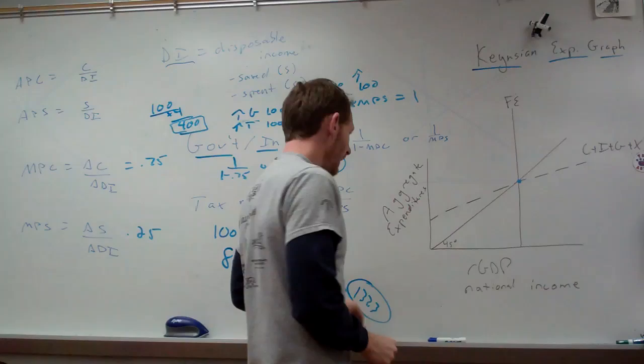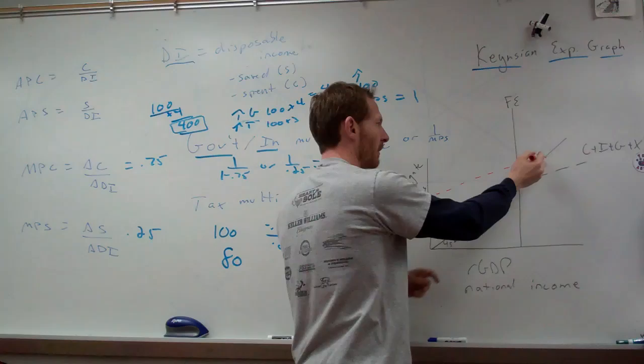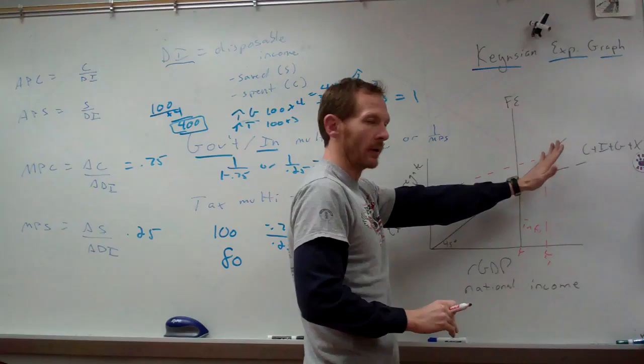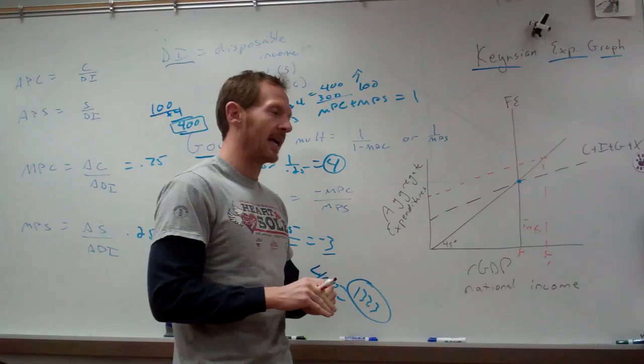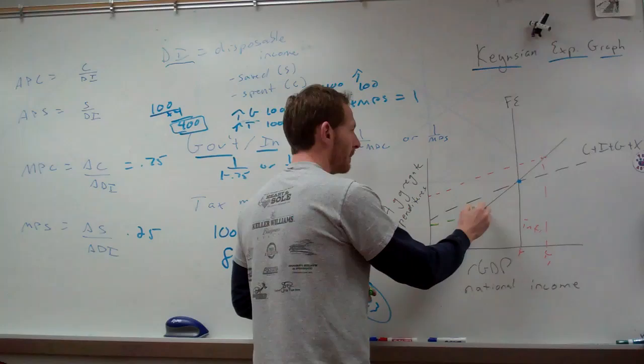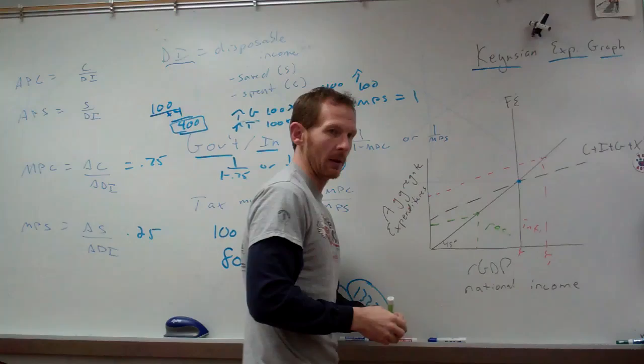Full employment output doesn't mean every single person is working — it means everyone is working minus frictional and structural unemployment. If our expenditures model hits the 45-degree line after full employment, the difference between the desired output and our actual output is an inflationary gap — we're producing more than the full employment level. If it hits the 45-degree line before full employment, we have a recessionary gap — we're not making as many goods and our equilibrium would have us in recession.